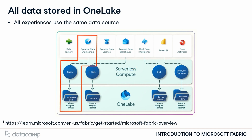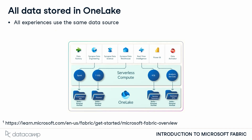For example, a data engineer using a data warehouse might write SQL to interact with that warehouse. Their SQL is passed through an engine named T-SQL, and their code is compatible with OneLake. Meanwhile, a data scientist might write Python code using the Data Engineering experience. This Python code is passed through a different engine named Spark that allows Python to interact with the Delta Parquet format as well. No matter what tool you use in Fabric, you'll interact with the same data as everyone else. Different teams can choose the tool that best fits their use case or skill set, and the data can be managed in a single unified experience.